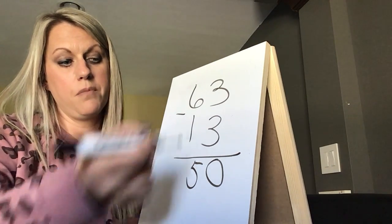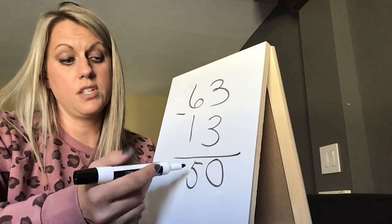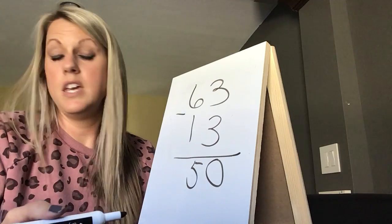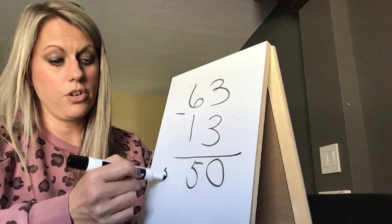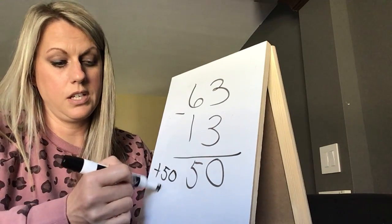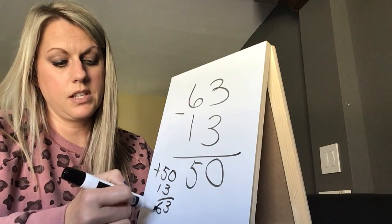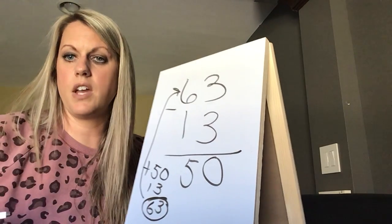And then you can check your work by doing this. You can actually probably even do this one in your head. 50 plus 10 is 60, plus three more is 63. If you can't do it in your head like that, then show your work. 50 plus 13, zero plus three is three and five plus one is six. And this matches this, so that way you know you got it right.